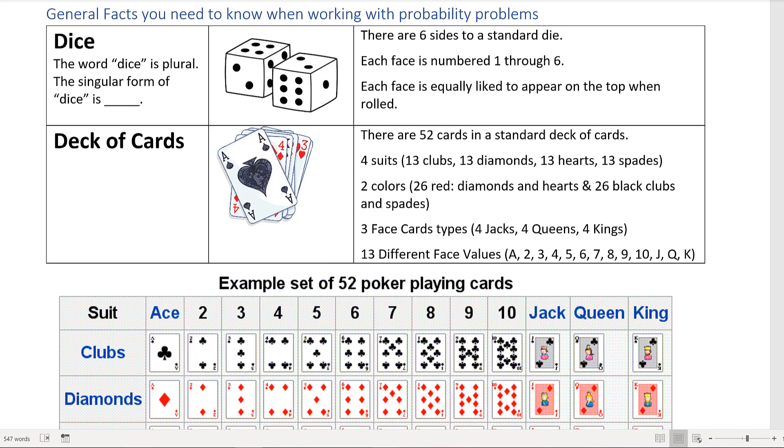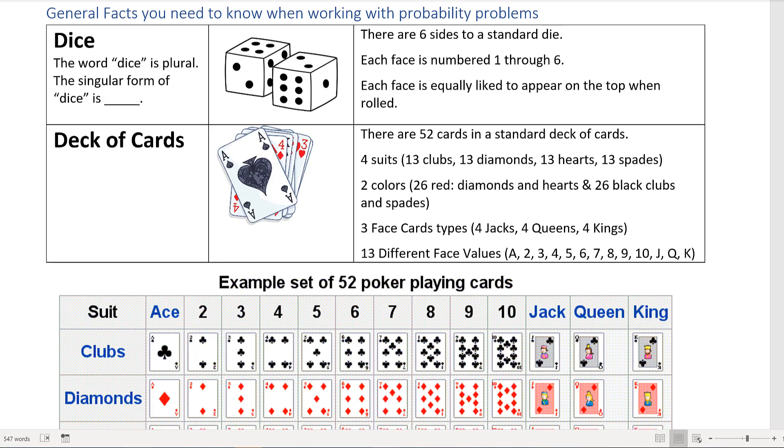So, a dice - the word dice is actually plural. If you ever need just one, then it's going to be called a die. So the singular form of dice is die. Now there are six sides to a standard die. Each face is numbered one through six and only appears once.